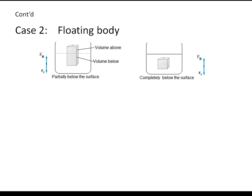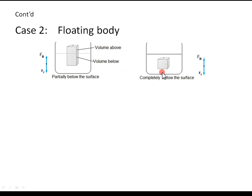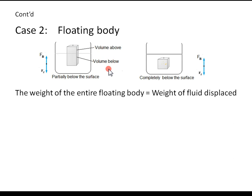The other case is the case of floatation. If an object floats in a fluid, it can do so in two ways: one with some part of its volume above the surface and the other part below; or it could float completely below the surface but without touching the bottom of the container — floating somewhere in the fluid. These two cases refer to the case of floatation of an object.